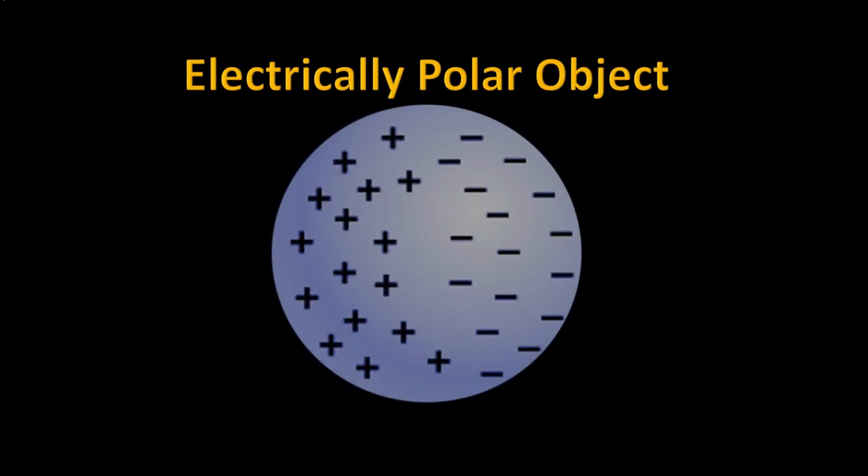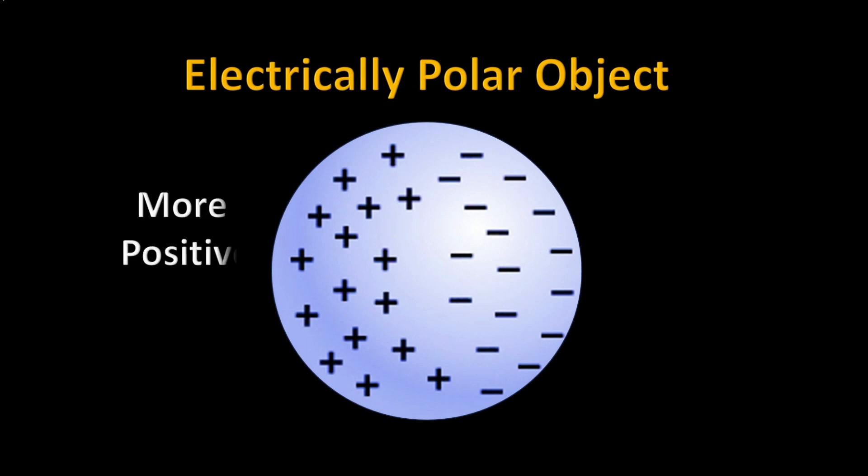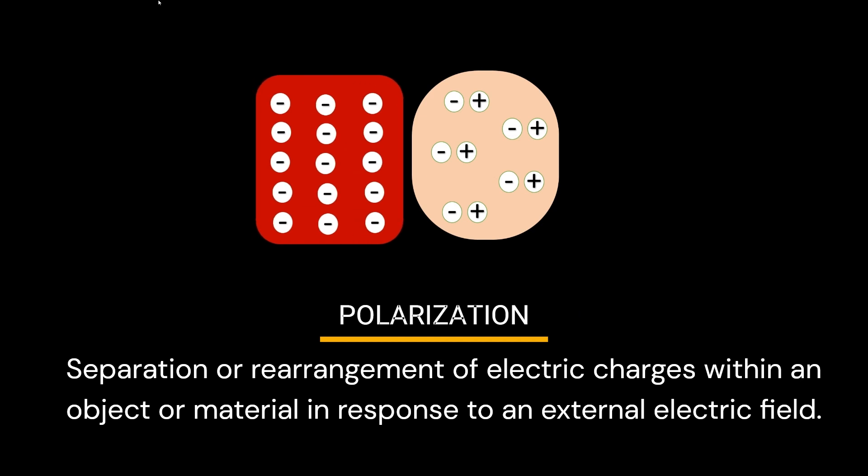When an object has a positive overall charge on one side and a negative overall charge on the other, it is considered to be electrically polar. In the context of charge...